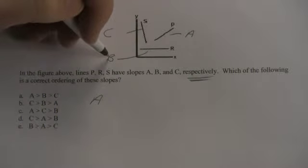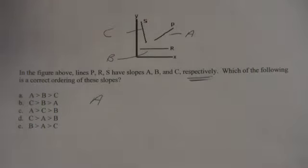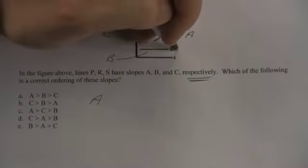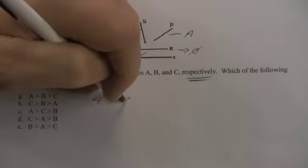Then slope B is going to be the second biggest because it's a flat line. The slope is zero, so the slope of line R is just zero. That means B is going to go second.